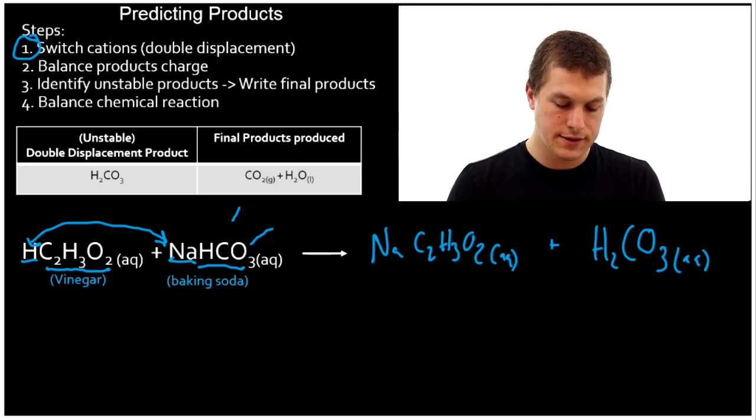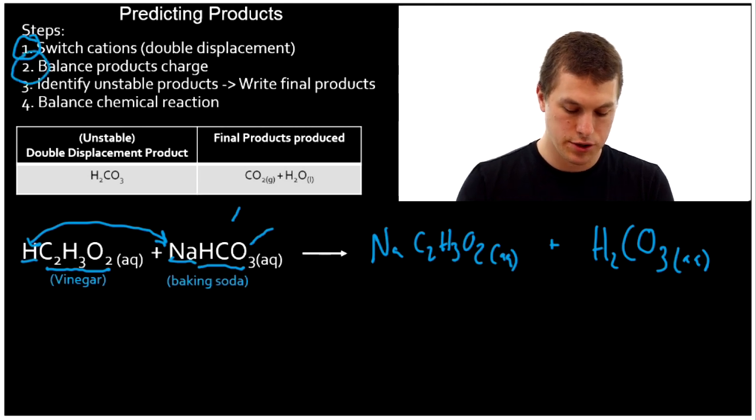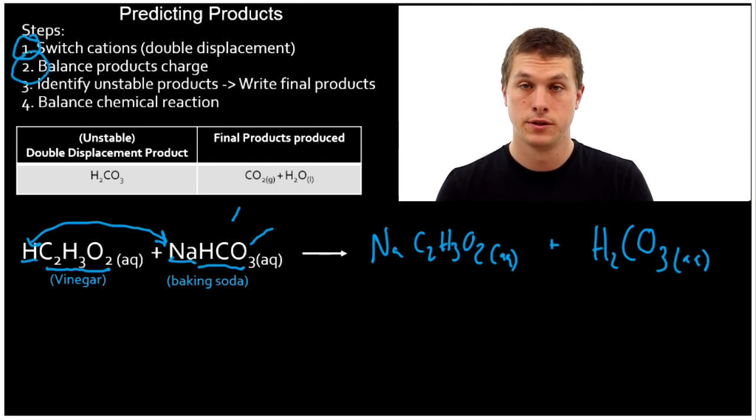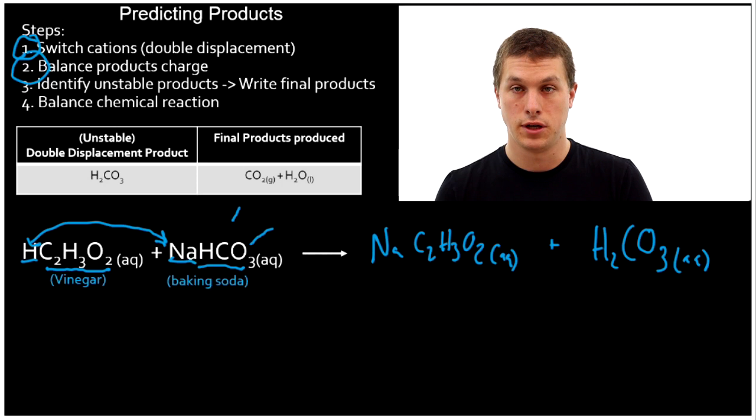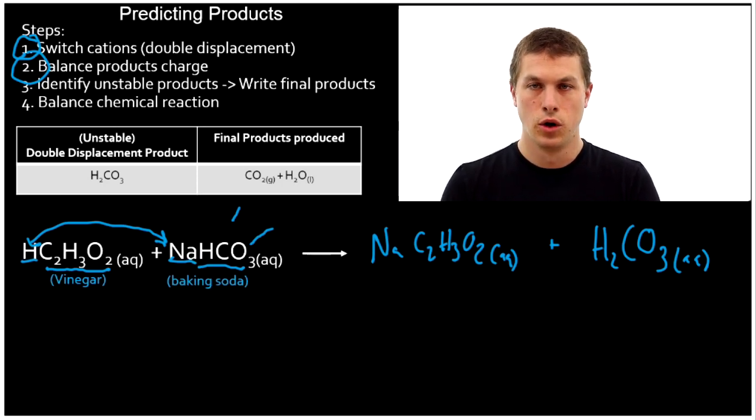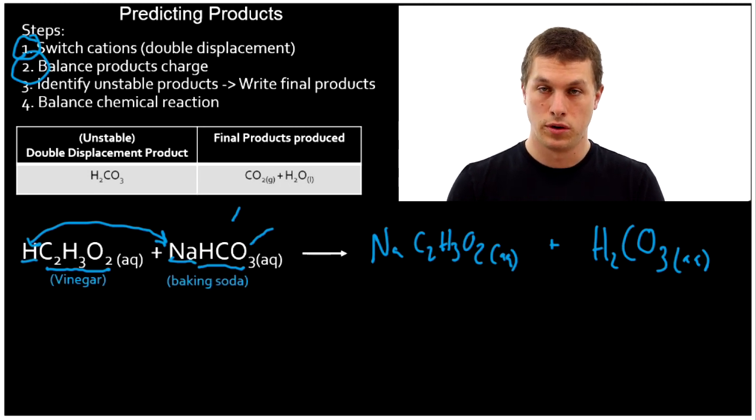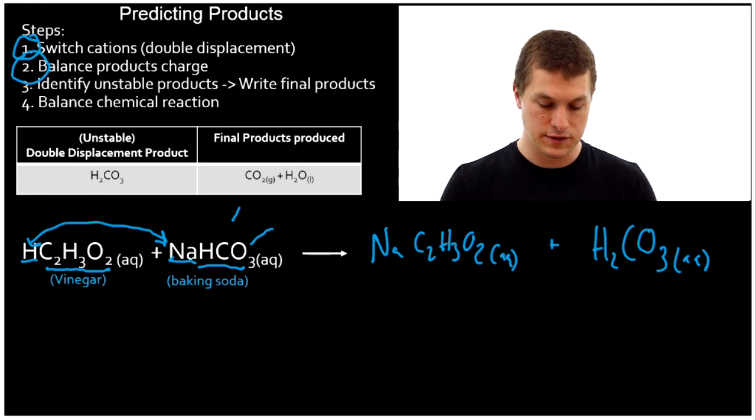What we need to do next is balance the product's charge. Make sure that our charges are neutral on both of our resulting compounds. Again, looks very similar to an acid-base reaction where we've predicted the general products, but now we need to know are those neutral in terms of their charge, so the cations and anions balance out.